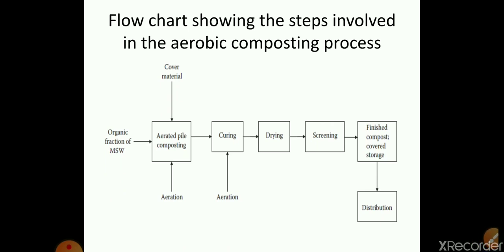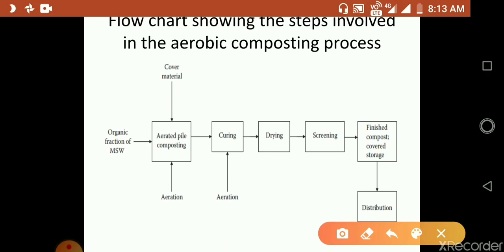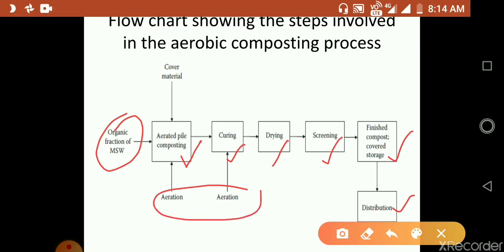This flowchart shows the steps involved in the aerobic composting process. The organic fraction of municipal solid waste — including paper waste, food waste from residential buildings and food processing industries, and cardboard — undergoes aerated pile composting in the presence of oxygen, followed by curing with water addition, drying, and screening to obtain the final compost for distribution. Aeration is provided in both the aerated pile composting and curing stages.